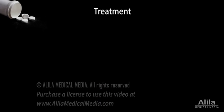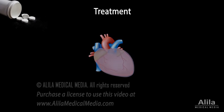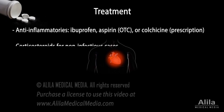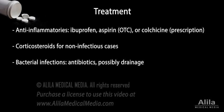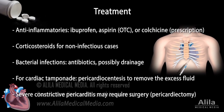Treatment depends on the cause and disease severity. Mild cases may get better on their own without treatment. Pain and inflammation can be relieved with anti-inflammatories. Corticosteroids may be used for non-infectious cases that do not respond to other medicines. Bacterial infections are treated with antibiotics and possibly drainage. If cardiac tamponade is present, a procedure called pericardiocentesis is performed to remove the excess fluid from the pericardial cavity. Severe constrictive pericarditis may require surgical removal of the pericardium as a last resort.